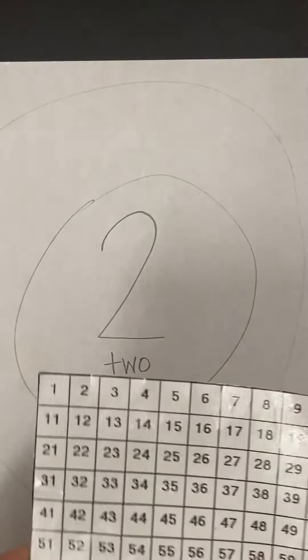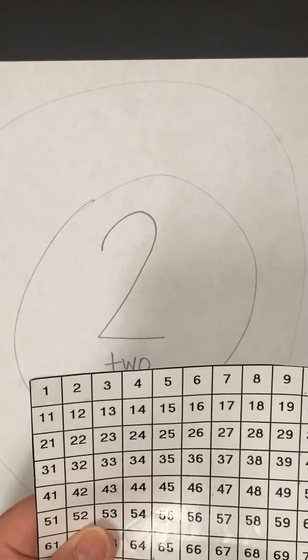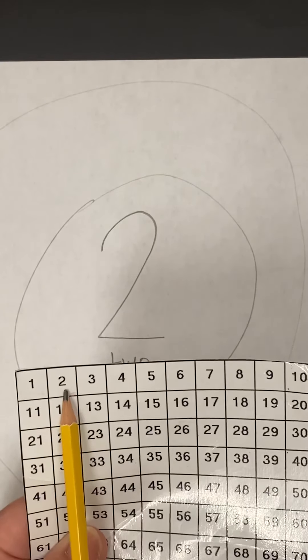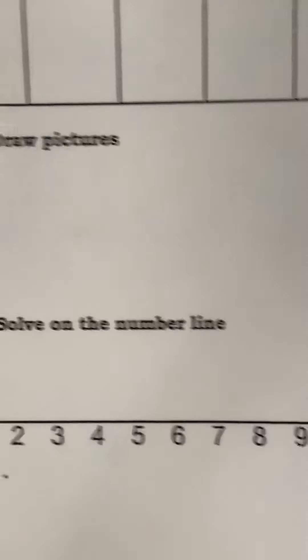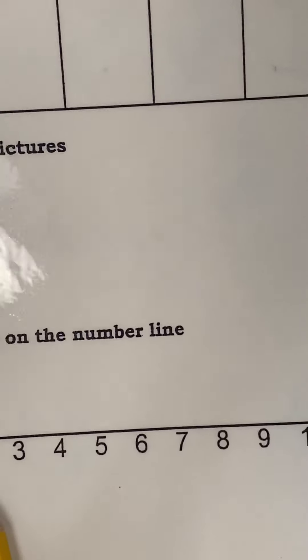Now, to find the number two, I start from the beginning and I count. One, two. Or, if I'm on a number line, one, two.